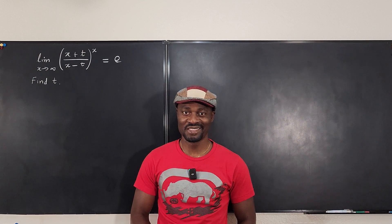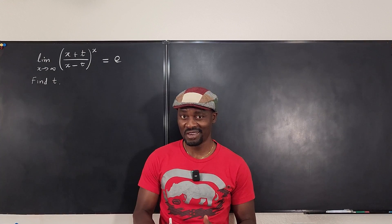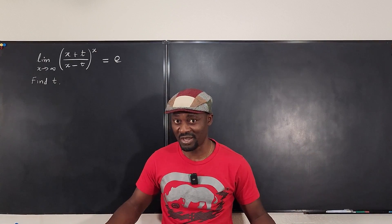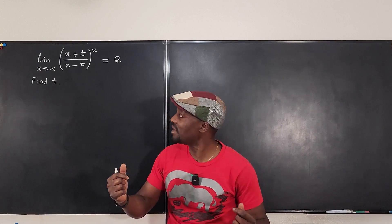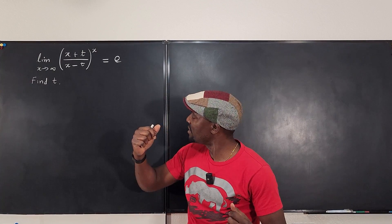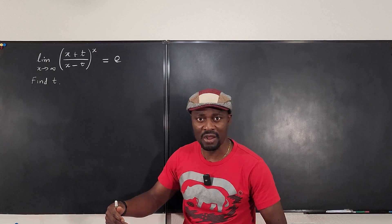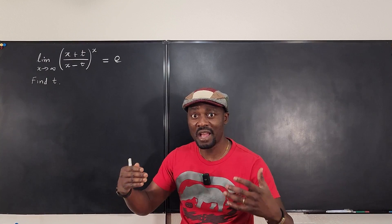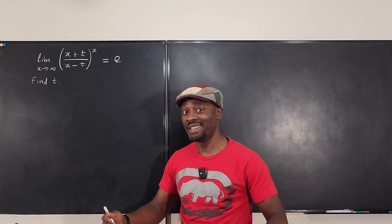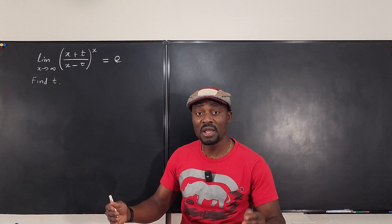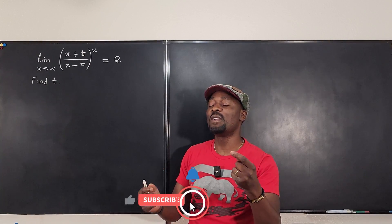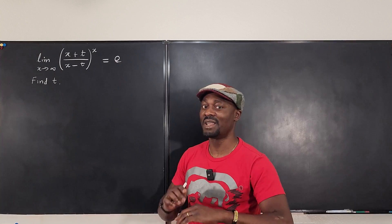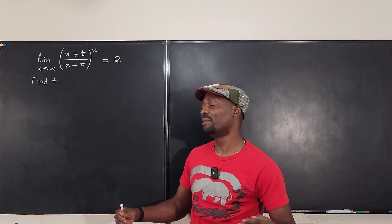Hello, welcome to another video. We have a limit problem here and this problem is very easy — or almost impossible — depending on what you already know. When I first saw this, I took the natural log of both sides, but then I had an epiphany: this looks like the actual definition of e. If you already know one of the most common definitions for e, this is going to be easy. If not, it's going to be really difficult. Let me show you how to do it.